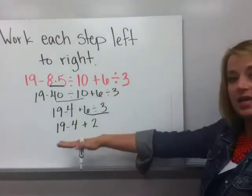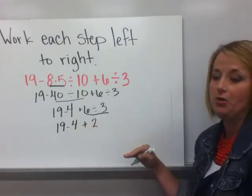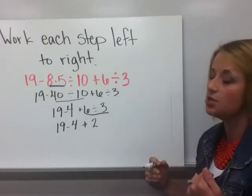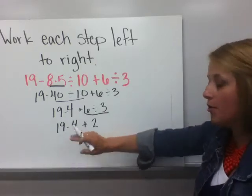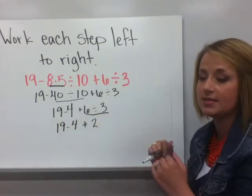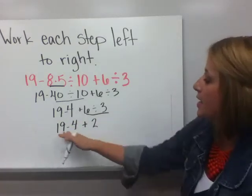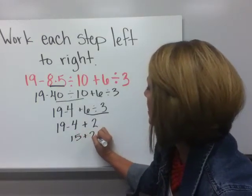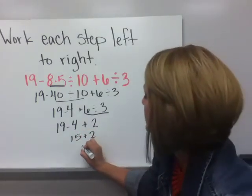Okay, look at it again. 19 minus 4 plus 2. In PEMDAS, please excuse my dear Aunt Sally. Yes, we say addition and subtraction first. However, I'm not going to do the division first. I'm going to do the subtraction first because addition and subtraction are the same step worked left to right. 19 minus 4 is 15. And then 15 plus 2 is 17.